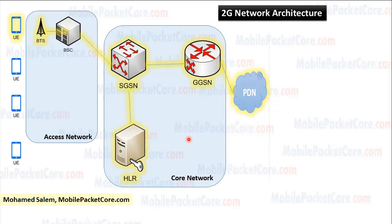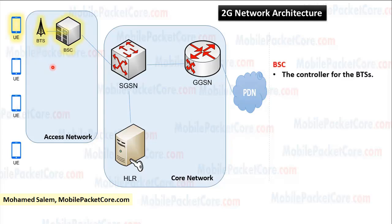Please don't bother yourself with abbreviations, as we will cover them at the end of the lesson. In 2G, the UE connects to the 2G site. The name of the 2G site is the BTS. Then the BTS connects to the BSC. The BSC works as the controller for the BTSs.